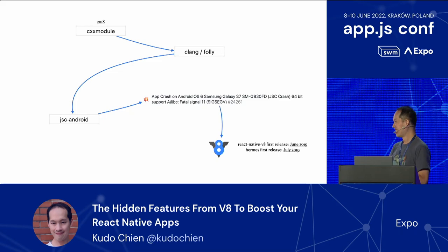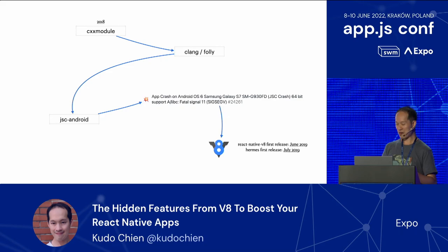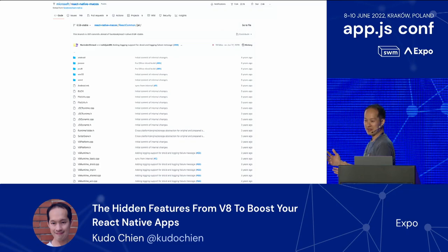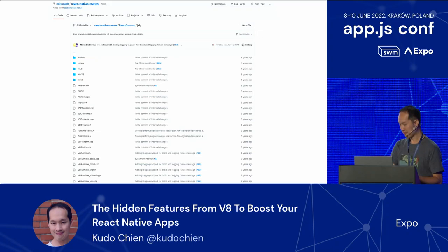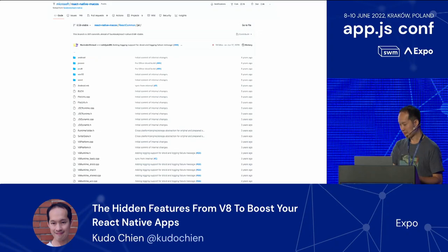One month after I started, Hermes was released. I think if I had known Hermes would be released the next month, I probably wouldn't have started this project. But I'm very lucky things happened this way, so I can be here to introduce React Native V8. I should also shout out that I'm not the first person to use the V8 engine — Microsoft did. There's a Microsoft React Native fork at React Native 58 that already had this kind of code, though not many people knew about it. I tried to do something different with my V8 engine — keep it easy to install — and I also wanted to learn from JSI, which is why I tried to build it myself.